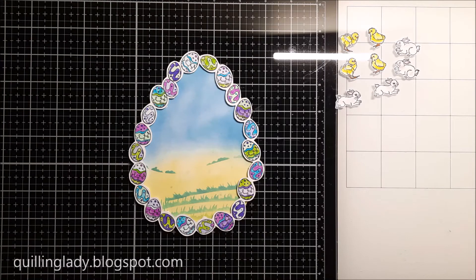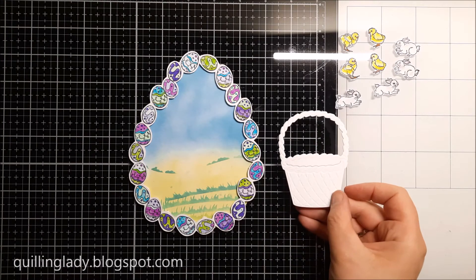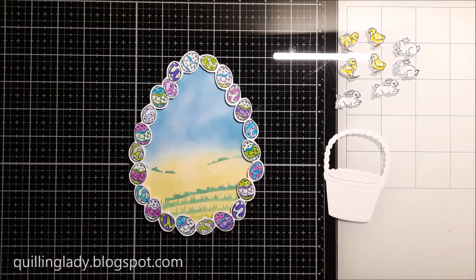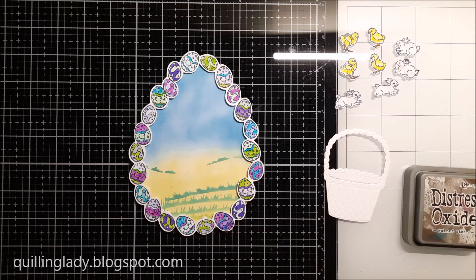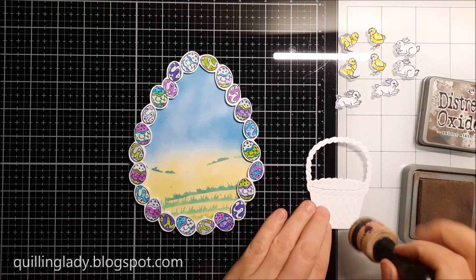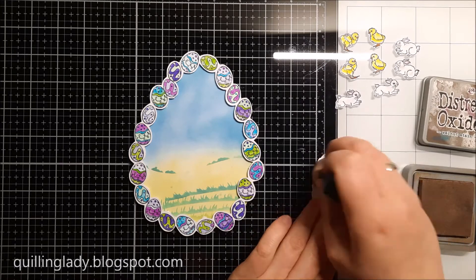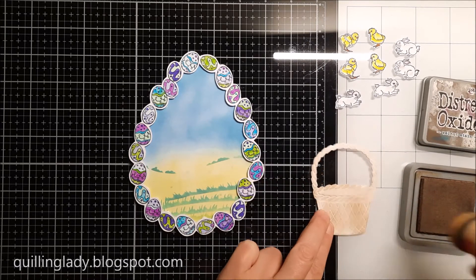Now I'm going to use Basket of Blossoms, and this cutting die set came from Die Cutting Essentials, and I think it was issue number 34. I really wanted to use that Easter basket. I absolutely love it, and I'm going to add a little bit of color using Walnut Stain Distress Oxide ink.